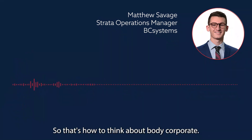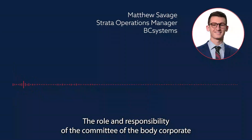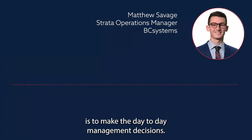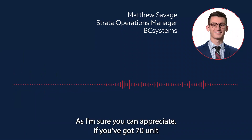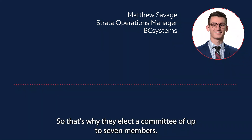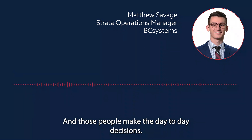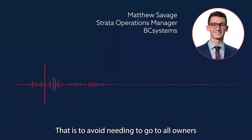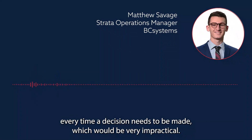So that's how to think about body corporate. The role and responsibility of the committee is to make the day-to-day management decisions. As you can appreciate, if you've got 70 unit owners, it's very difficult to get them to agree on things. That's why they elect a committee of up to seven members, and those people make the day-to-day decisions, to avoid needing to go to all owners every time a decision needs to be made, which would be very impractical.